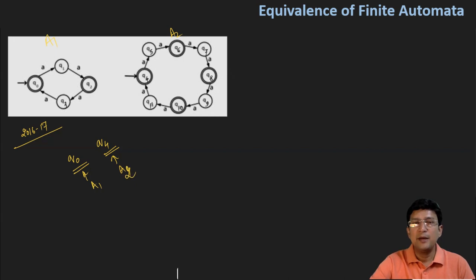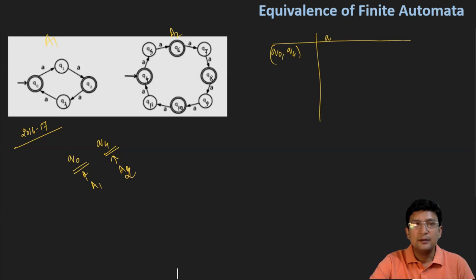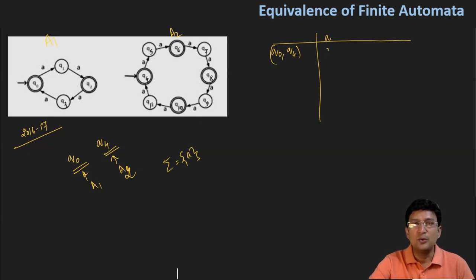Now let's take the first pair. The first pair we select is Q0 and Q4, which are the initial states. The input symbols here are A only, so we have to see the transitions with symbol A only. Q0 on taking A goes to Q1, and Q4 on taking A moves to Q5.